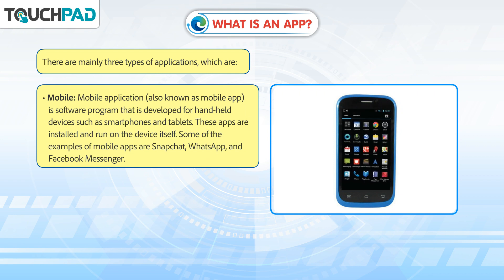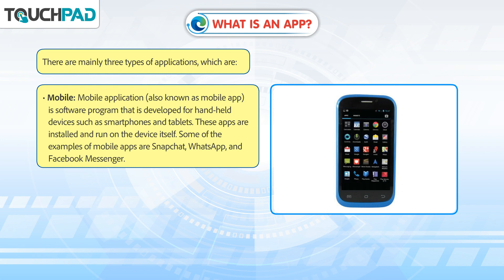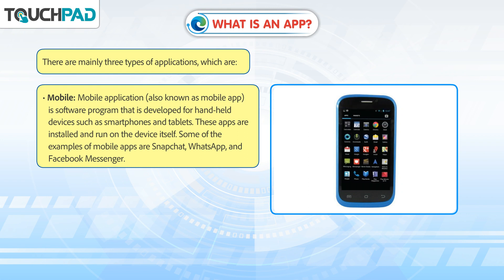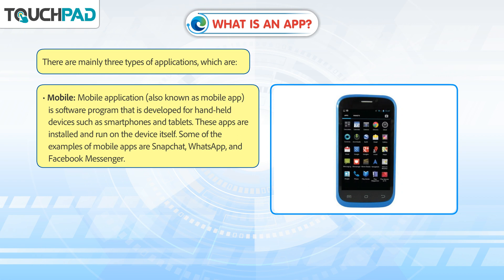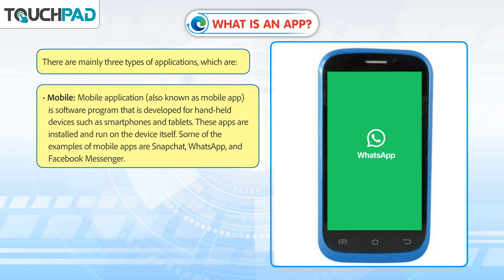A mobile application, also known as a mobile app, is a software program that is developed for handheld devices such as smartphones and tablets. These apps are installed and run on the device itself. Some examples of mobile apps are Snapchat, WhatsApp, and Facebook Messenger.